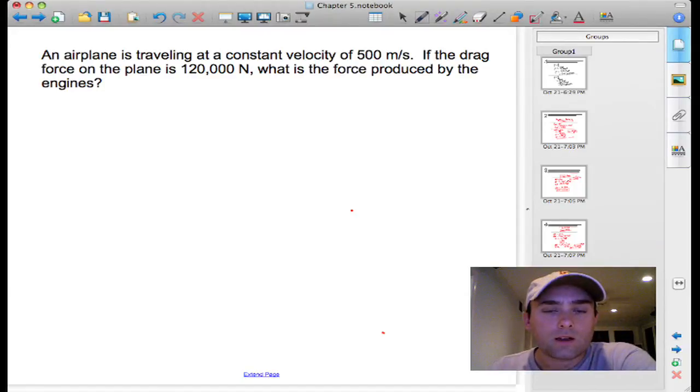Okay, so here is another type of problem that you'll encounter. This problem doesn't really have a trick to it, but there's some information that you need to know in order to do this properly. So the problem reads: an airplane is traveling at a constant velocity of 500 meters per second. If the drag force on the plane is 120,000 newtons, what is the force produced by the engines?